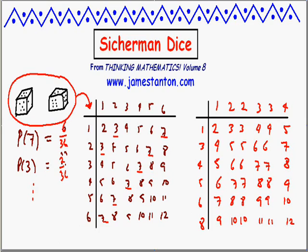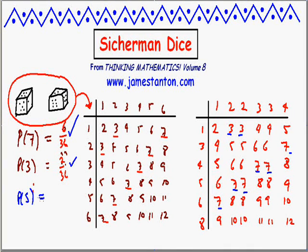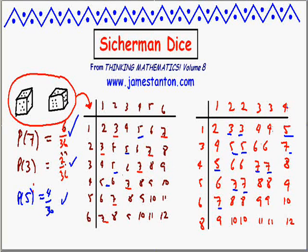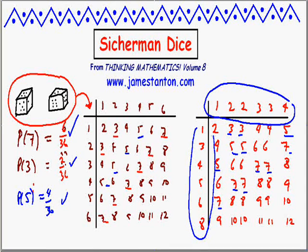So with a pair of Sicherman dice, what's the probability of rolling a 7? There are 36 possible outcomes, and 1, 2, 3, 4, 5, 6 — the chance of rolling a 7 with Sicherman dice is 6 out of 36. The chance of rolling a 3: that's 1, 2 — just 2 out of 36. And the probability of rolling a 5: 1, 2, 3, 4 — that's 4 out of 36. In fact, Sicherman dice — two dice renumbered this way — give the same probabilities as ordinary dice.